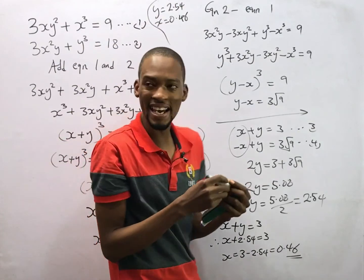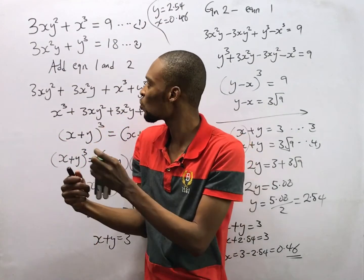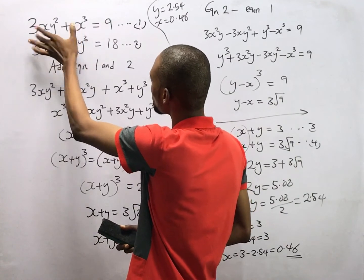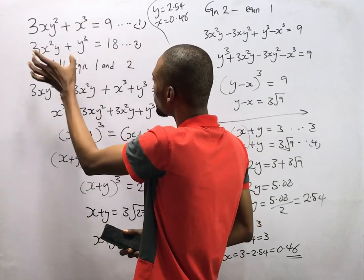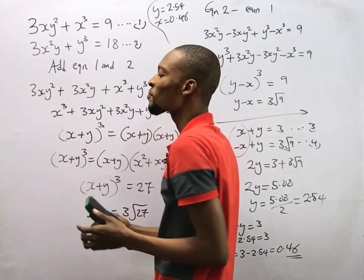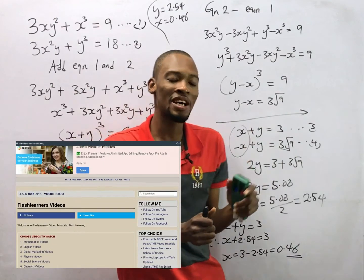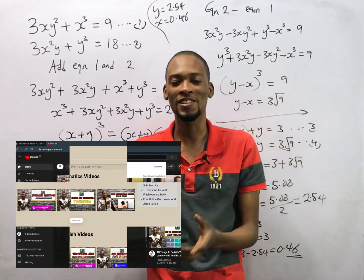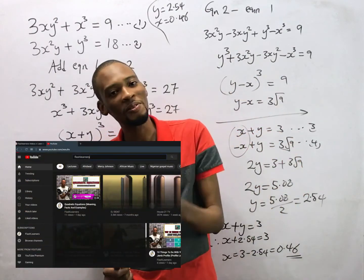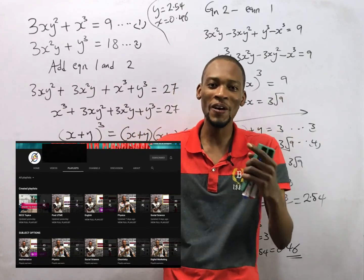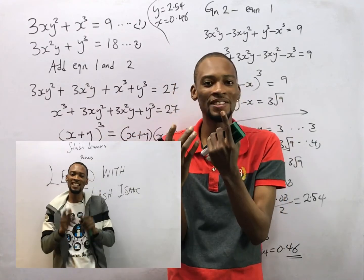If you put the values of s and y into the first expression you get 9, and putting the values into the second expression you get 18. So that's how you solve this type of simultaneous equation question. Thank you for watching and don't forget to subscribe to this channel for more amazing videos.